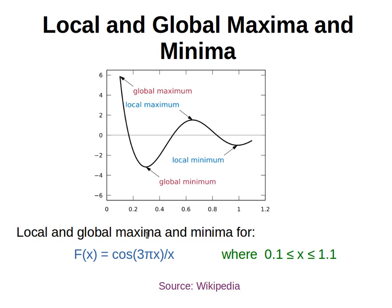The plot you can see is from Wikipedia, and it's for the function cosine(3π × x) / x, where x is between 0.1 and 1.1. As you can see when we plot this function, the curve goes down as x increases until a certain point, then goes up, then goes down again, and then up again. The lowest point is called the global minimum, and the highest value on the y-axis is called the global maximum.